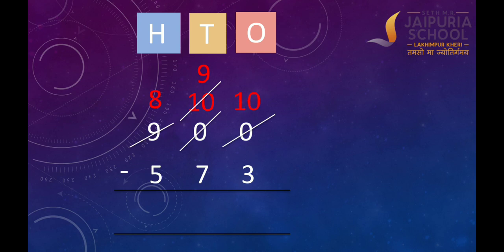Now we can subtract 3 ones from 10 ones. So, 10 ones minus 3 ones is equal to 7 ones. Let's write 7 under the ones column. Now let's subtract 7 tens from 9 tens. 9 tens minus 7 tens is equal to 2 tens. Let's write 2 under the tens column. Now let's subtract: 8 hundreds minus 5 hundreds is equal to 3 hundreds. Let's write 3 under the hundreds column.